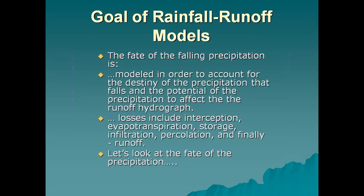The goal of rainfall runoff models is that the fate of the falling precipitation is modeled in order to account for the destiny of the precipitation that falls and its potential to affect the runoff hydrograph. Losses include interception, evapotranspiration, storage, infiltration, percolation, and finally runoff. Let's look at the fate of the precipitation.